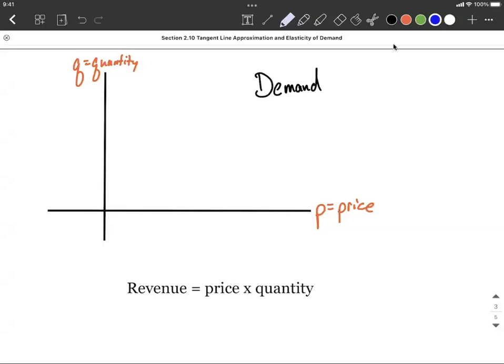As we think about our revenue function, revenue is produced by multiplying the price we're charging for something multiplied by the quantity that we actually sell.